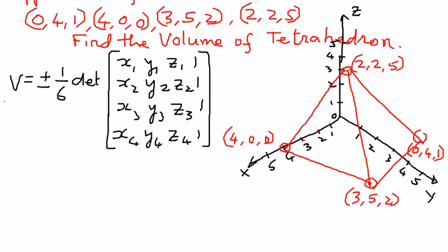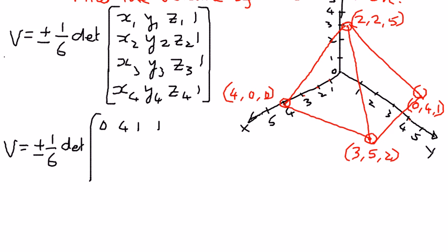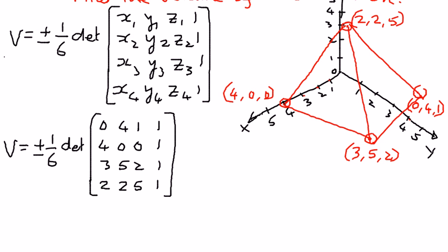Let's get started. We will plug in the numbers. The volume equals plus or minus 1/6 times the determinant of the matrix with rows (0, 4, 1, 1), (4, 0, 0, 1), (3, 5, 2, 1), and (2, 2, 5, 1). Now we need to find the determinant of this.